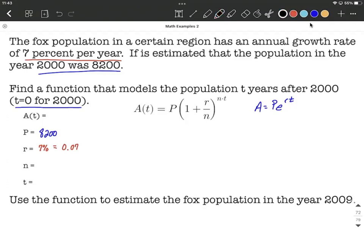The number of compoundings in a single year? Well, we were told this was 7% per year, and it was an annual growth rate, and we never saw continuously in any of the wording there. So that's going to tell us n is simply 1.